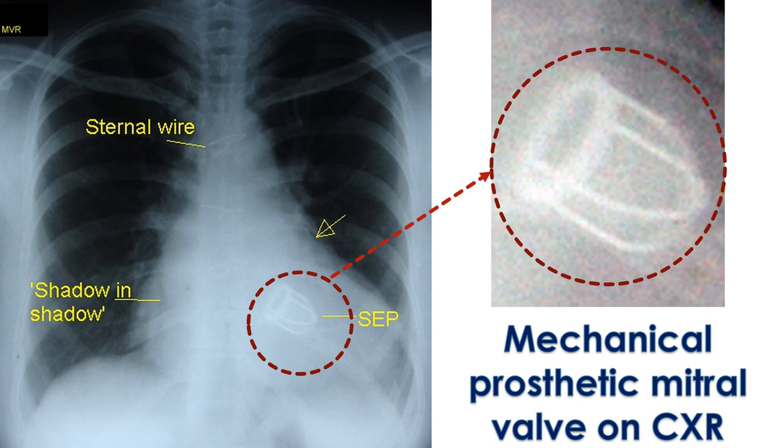In general, prosthetic valves at the mitral position have a higher thrombotic risk. New types of aortic mechanical prosthetic valves with an INR goal of 1.5 to 2.5 with low-dose aspirin after the initial 3 months are also available.